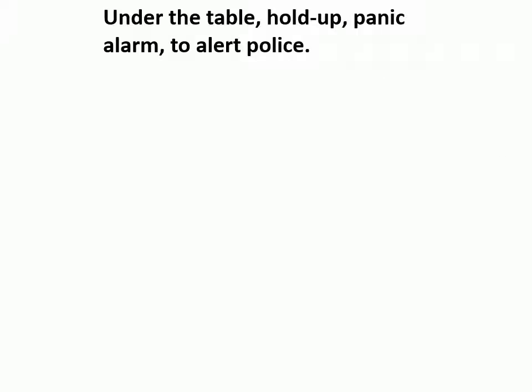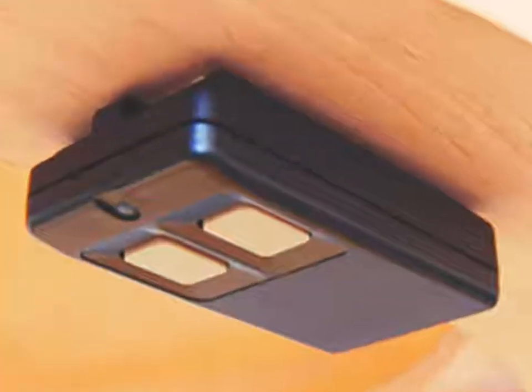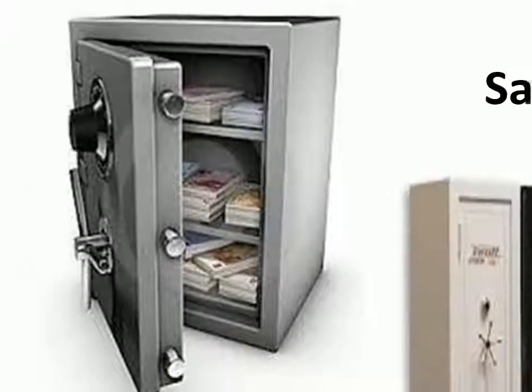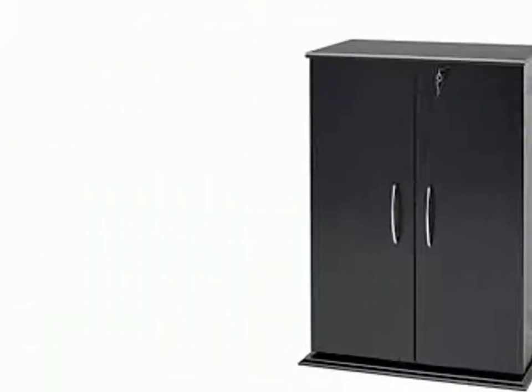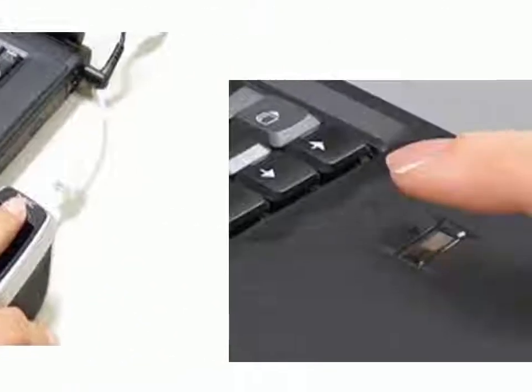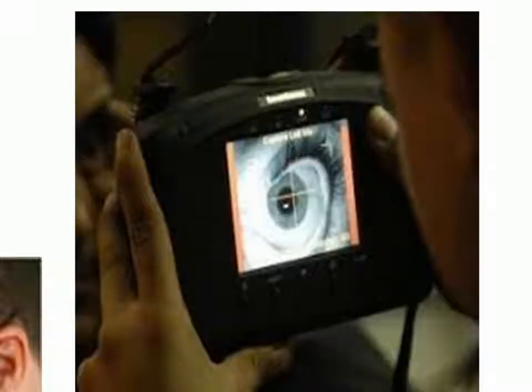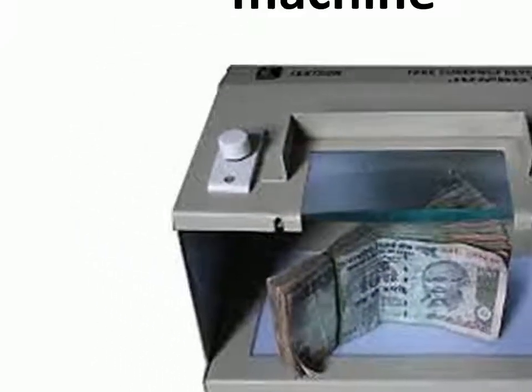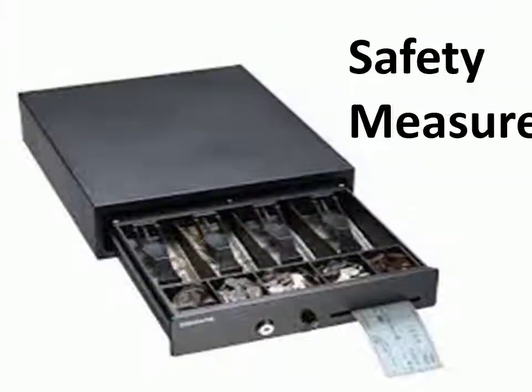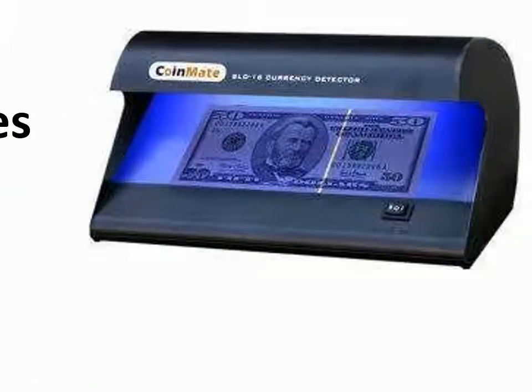Additional physical measures include an under-the-table hold-up panic alarm to alert police, safety vaults, locked cabinets, locked stores, biometric or fingerprint scanners, iris or retina scanners, currency counting machines, lock and key systems, locked cash register drawers, fake note detectors, and cash vans.